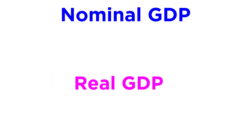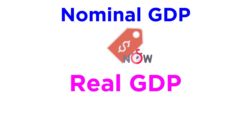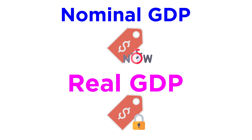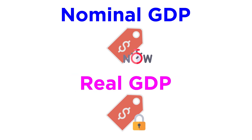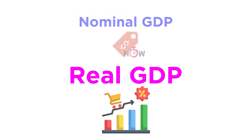There is also nominal GDP and real GDP. Nominal GDP is measured in current prices, while real GDP is measured in constant or unchanging prices. In other words, real GDP is nominal GDP adjusted for inflation. Real GDP is a more accurate way to measure economic growth, since inflation can distort the actual value of goods and services.